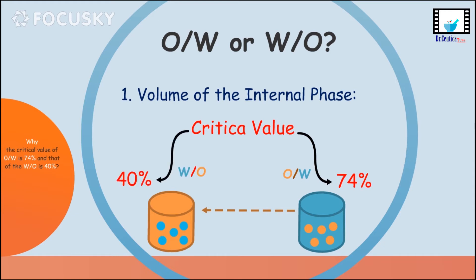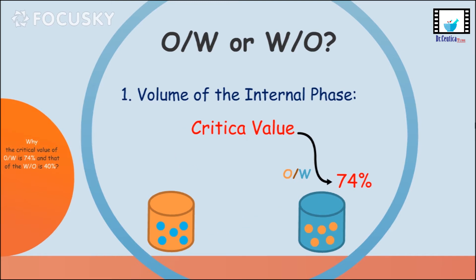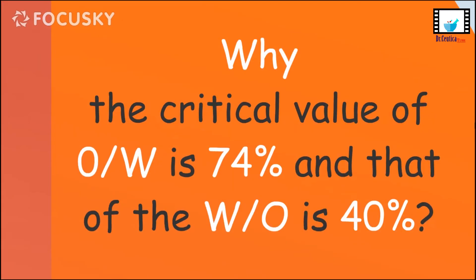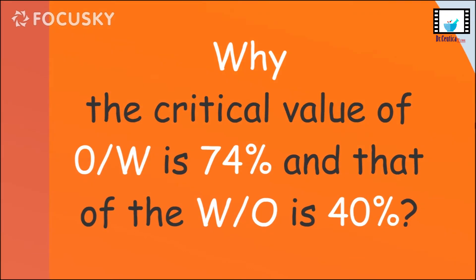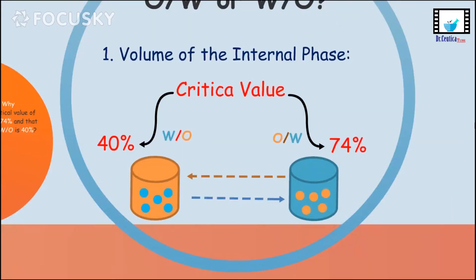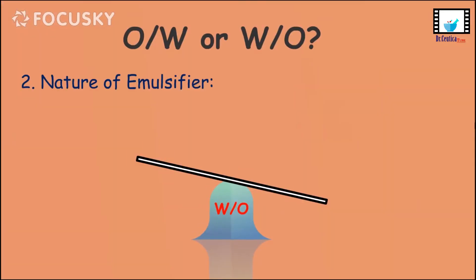For the water-in-oil emulsion, the critical value is about 40%, meaning if the water exceeds 40%, the emulsion is likely to convert into an oil-in-water emulsion. Why is the critical value of the oil-in-water emulsion 74% while that of the water-in-oil is only 40%? I will hint at this in just a second.